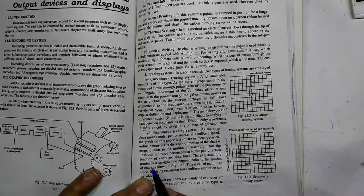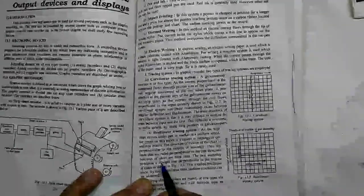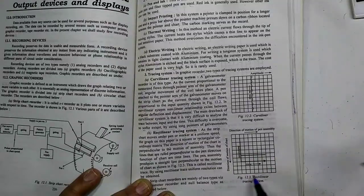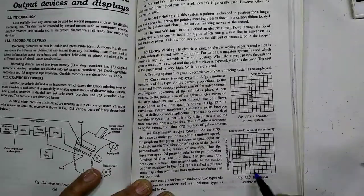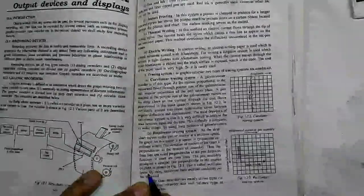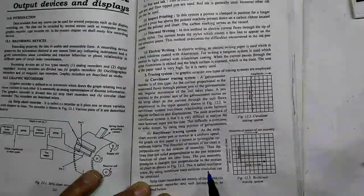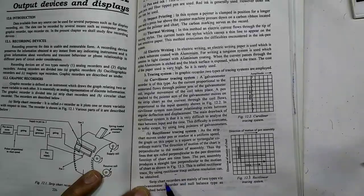The pen assembly produces a straight line perpendicular to the motion of the chart as shown in the figure. This is a rectilinear tracing system. By using rectilinear trace, uniform resolution can be obtained.